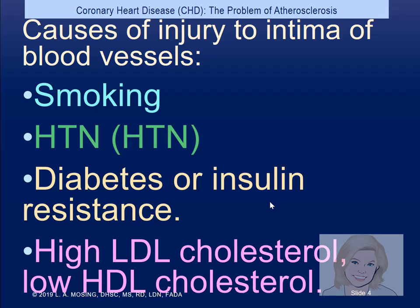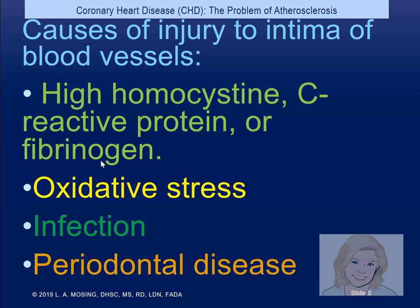We can have damage to the intima by smoking, not controlling your blood pressure, blood sugar not under control — whether it's type 1, type 2, or insulin resistance, which is type 2 diabetes. When they have a high LDL, which means more plaque buildup in the arteries, and lower HDL, which is the one that reverses it. We can also have infection, periodontal disease, and oxidative stress. C-reactive protein is a marker of inflammation. Now that we've added folate to our food, that has helped reduce the amount of C-reactive protein, so in America that's less of a problem than it has been in the past.